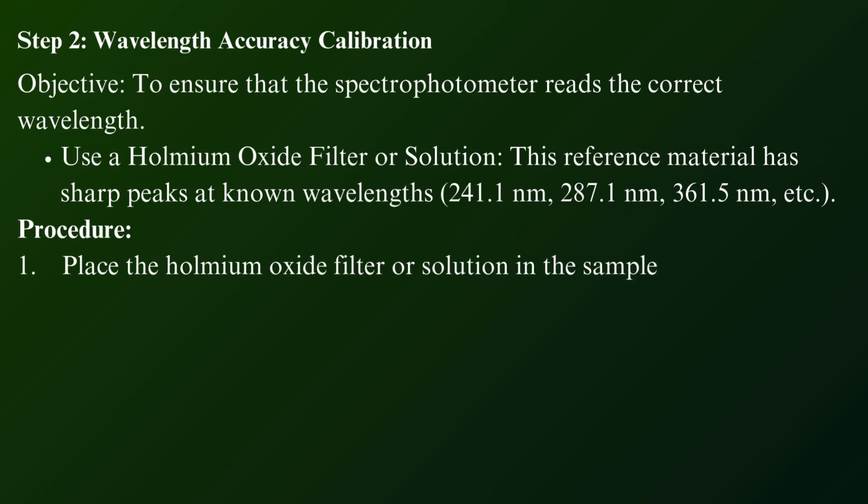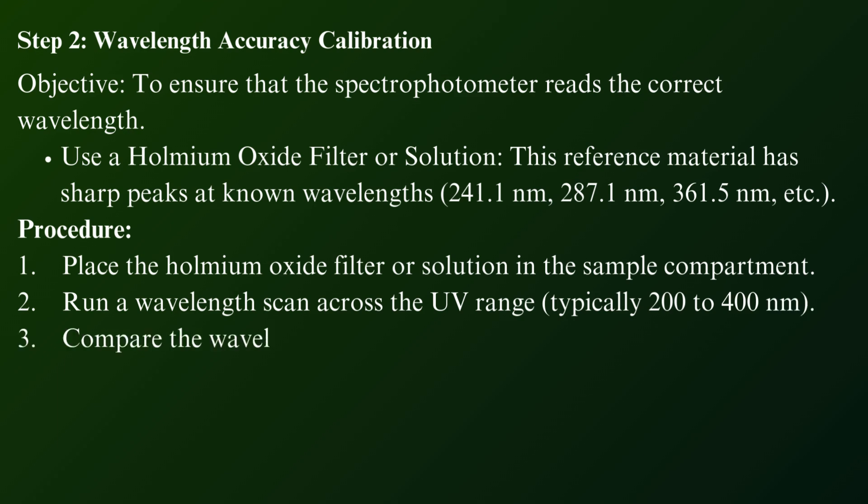Procedure: Place the holmium oxide filter or solution in the sample compartment. Run a wavelength scan across the UV range, typically 200 to 400 nanometers. Compare the wavelengths of the peaks recorded by the spectrophotometer to the certified reference values.